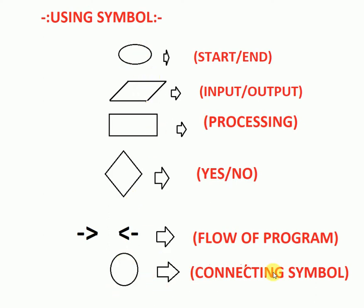This is the connector symbol. It is used when you are writing a long or complex flowchart. If your page ends, you have to continue on the next page. At the bottom of one page, you use this connector symbol. On the next page, where you start the program again, you use this symbol again so everybody understands the flowchart continues from end to start.